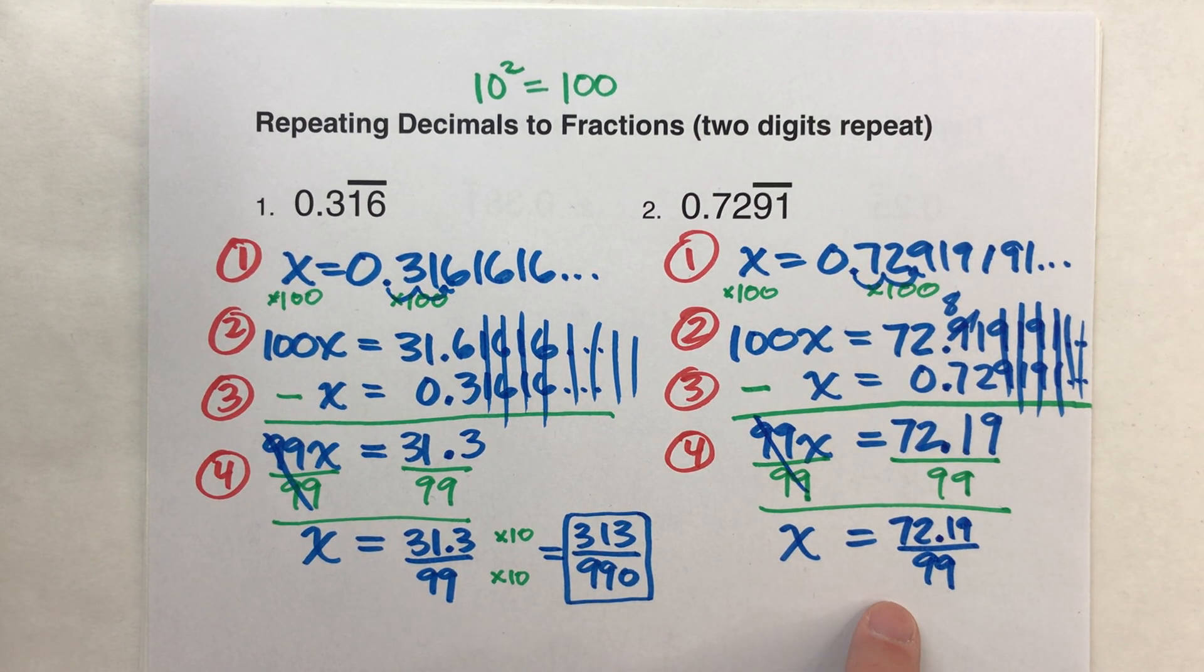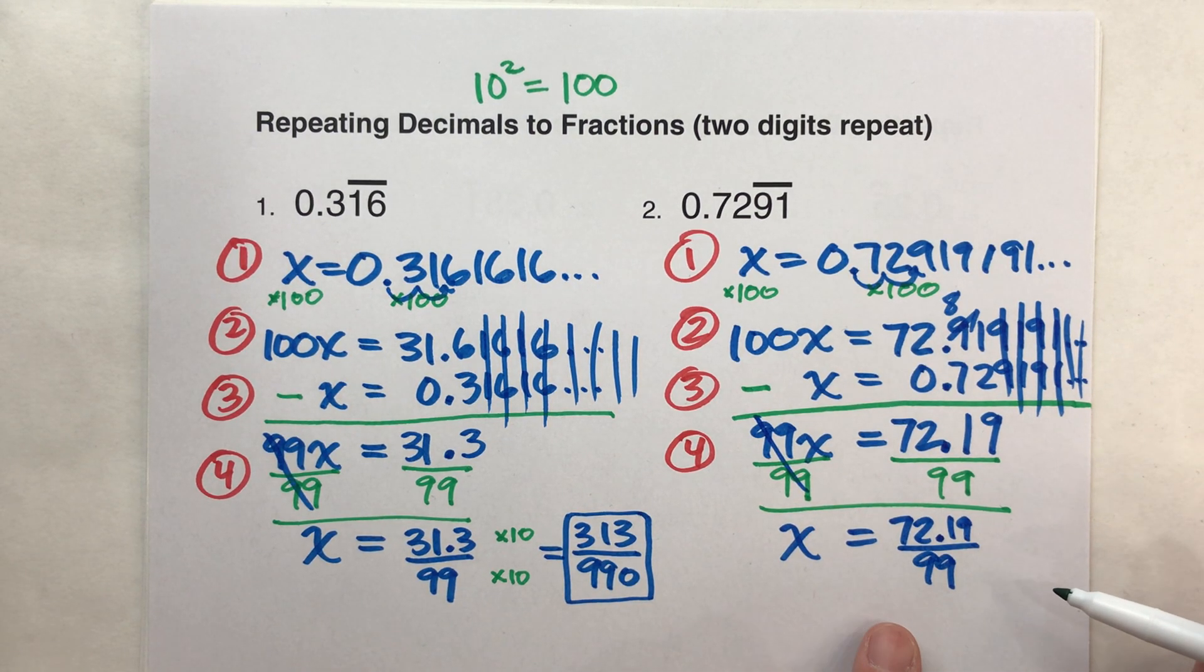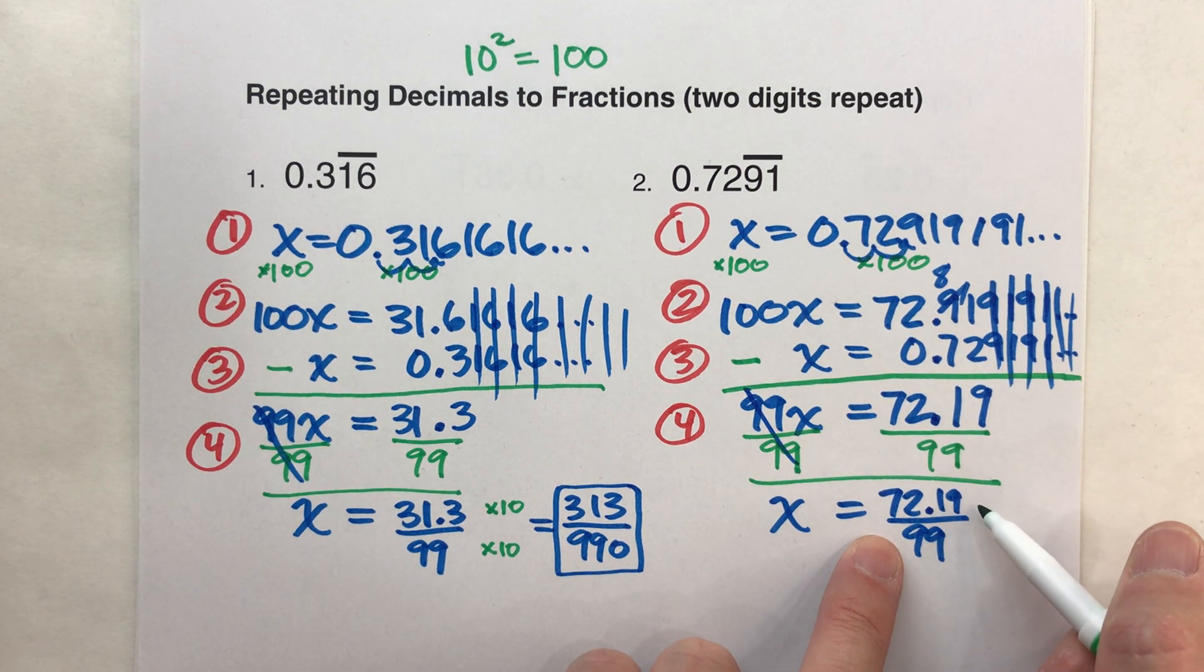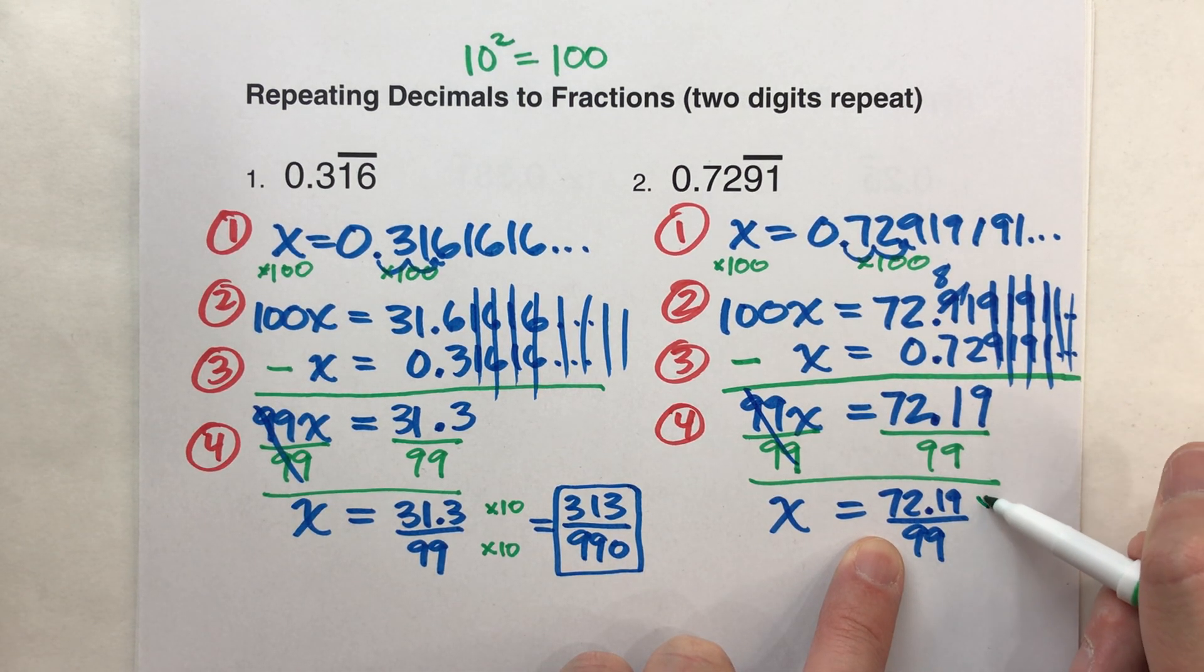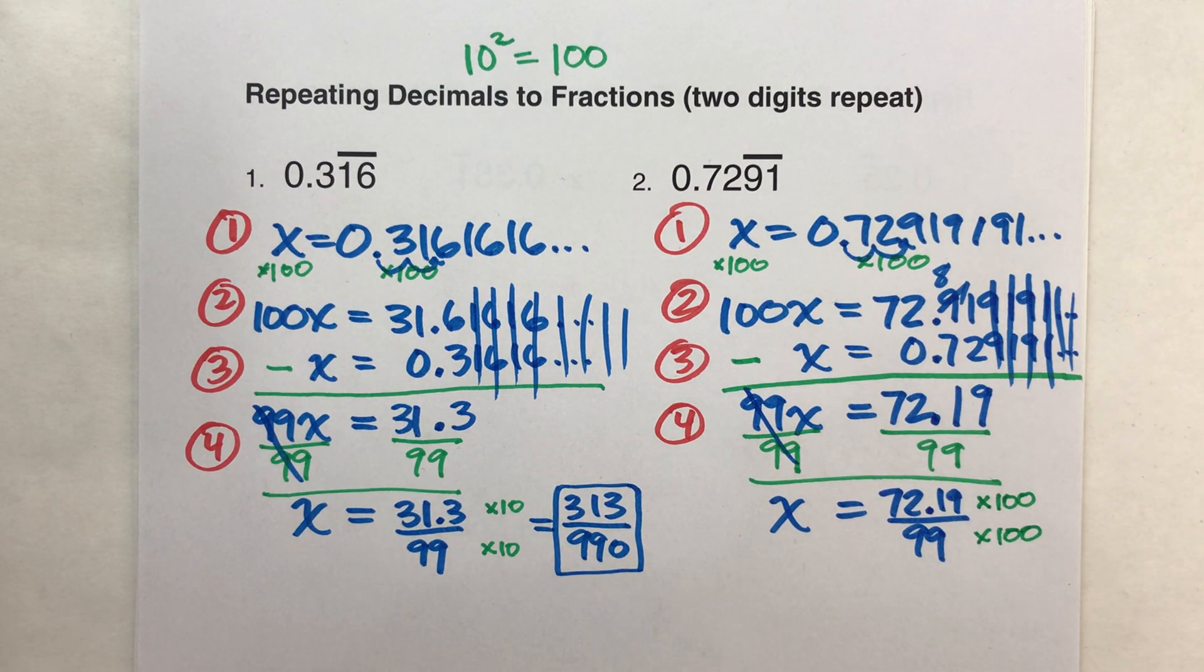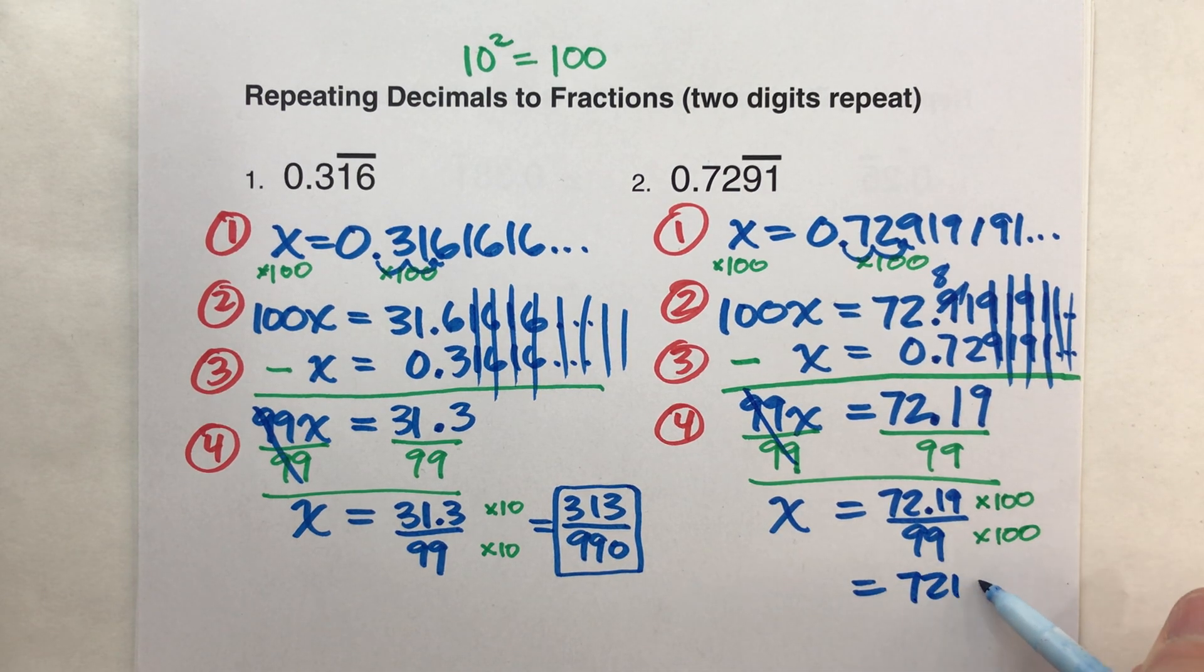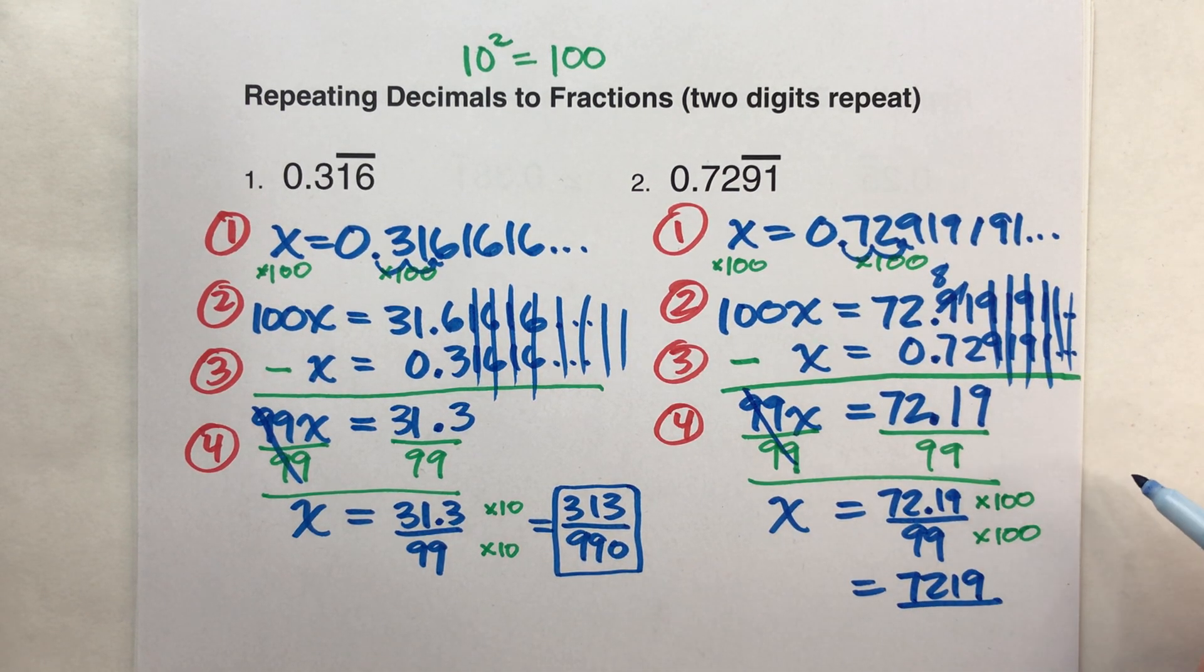Of course, I can't give a fraction with decimals in it, so I need to multiply the top and bottom by something so the decimals go away. And notice, I need to move that decimal over two places this time. So I'm going to multiply the top and bottom by 100. When I do that, I move that decimal over two places, I finally get a whole number on top. And on the bottom, 99 times 100 is 9900.